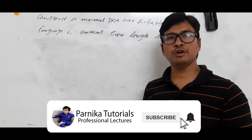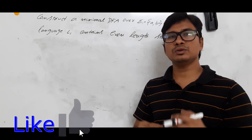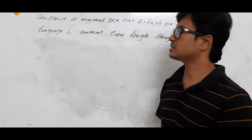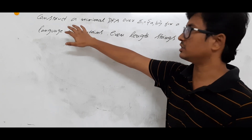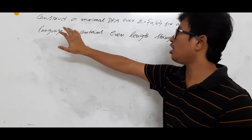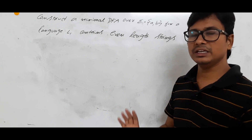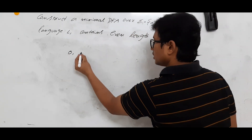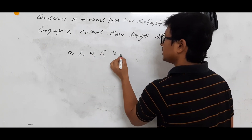Good morning friends, I hope everyone is doing well. I request everyone to go through the videos in sequence for better understanding. Let me discuss another example for constructing the minimum DFA. The question is: construct a minimal DFA over alphabets {a, b} for language L1, which contains even-length strings. Even length means length 0, 2, 4, 6, 8, and so on.